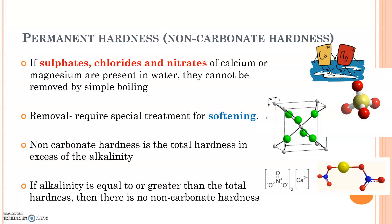Unlike temporary hardness, boiling techniques and lime-adding techniques cannot remove permanent hardness — we have to use special treatments. For water softening, if total hardness is less than alkalinity, then total hardness equals carbonate hardness and non-carbonate hardness is zero.